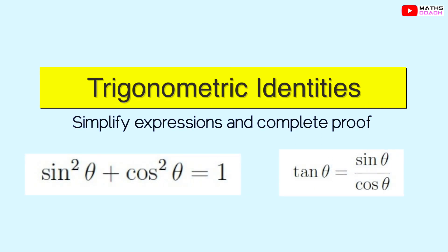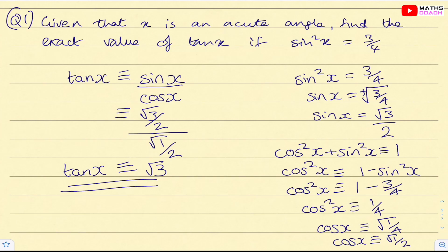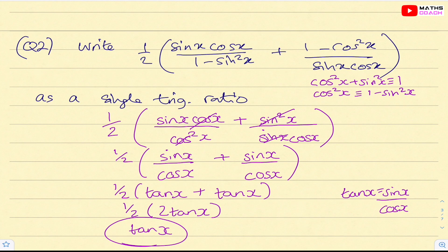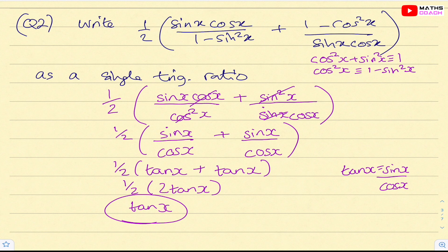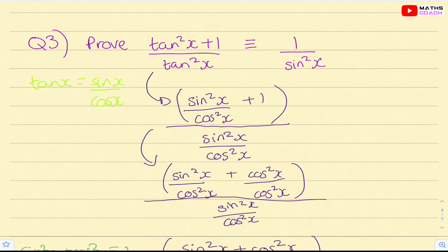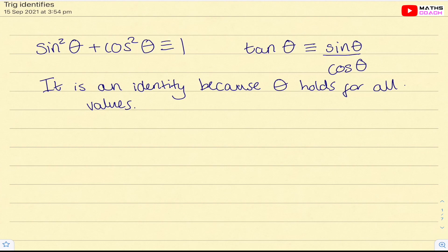In this lesson, we're going to be looking at trig identities, which is part of the pure AS year one content. We're only going to be looking at two identities: sin squared theta plus cos squared theta is equal to one, and tan theta is equal to sin theta over cos theta. A quick overview of today's lesson is how to manipulate the identity and then look at questions where they ask you to prove the left hand side is equal to the right hand side.